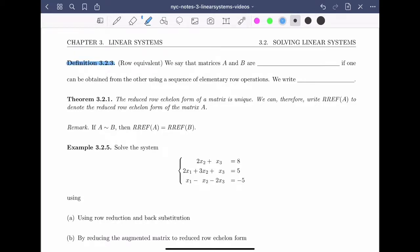We begin with a definition. We say that matrices A and B are row equivalent if one can be obtained from the other using a sequence of elementary row operations.